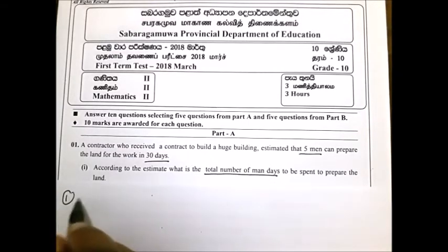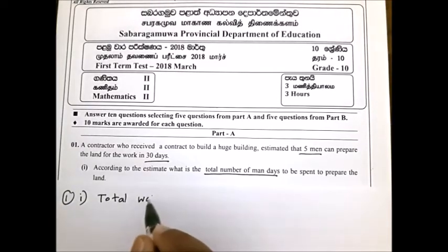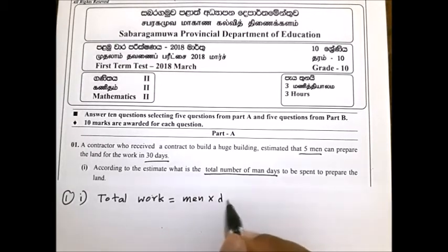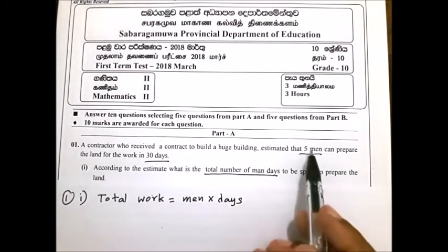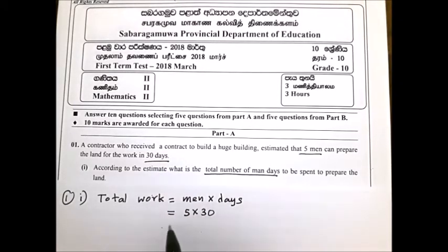First question, first part. Total work is equal to number of men multiplied by number of days: five men, 30 days. Five multiplied by 30, the answer is 150 man-days.